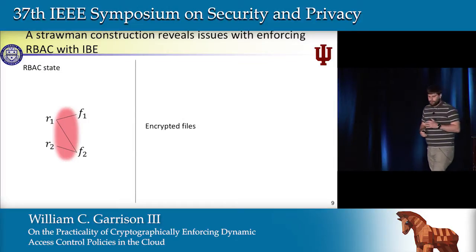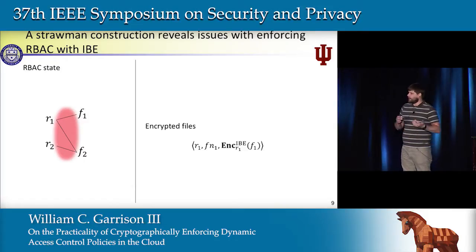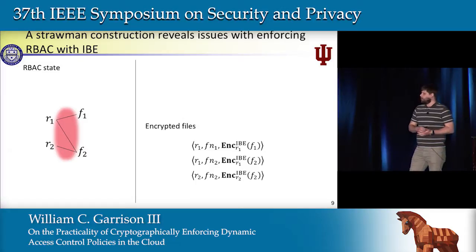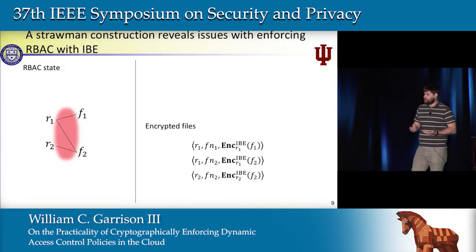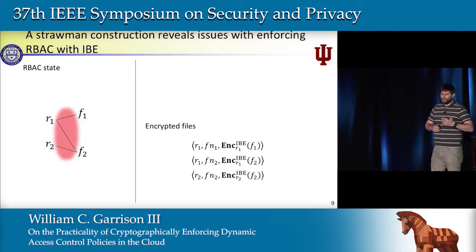So we can encrypt file 1 to the shared identity role 1, and encrypt file 2 to the role identities R1 and R2. It's important to note that this means we have to encrypt this file twice—we have to make sure that both users in role 1 and users in role 2 will be able to access this file.